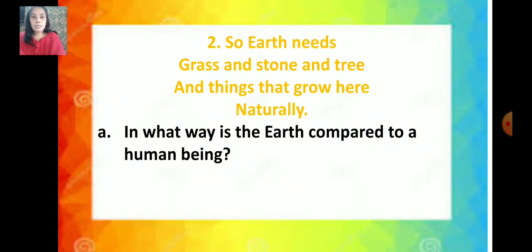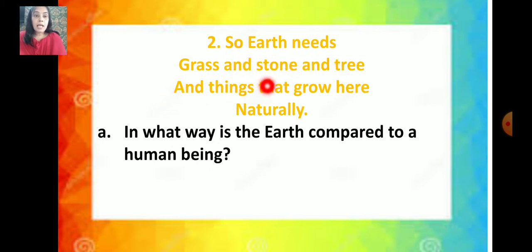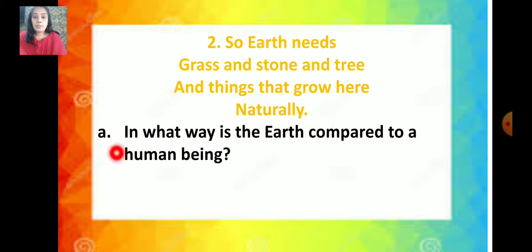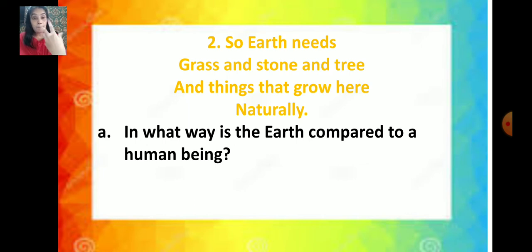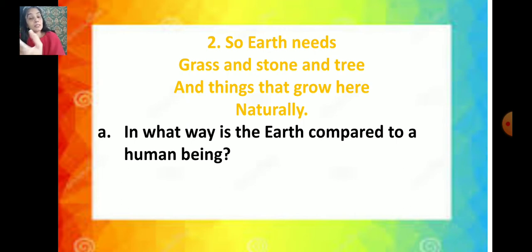Now our next question — question number two — is based on the lines: 'Earth needs grass and stone and tree and things that grow here naturally.' The question is: in what way is the earth compared to a human being? For the human being, blood, muscles and bones are important. In the same way, for the earth, grass, stone and trees are important — they are like the blood, muscles and bones for the earth. The earth too has needs, just like human beings.